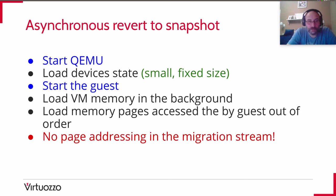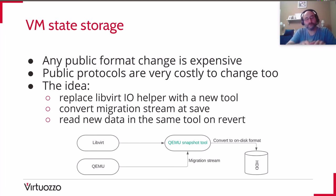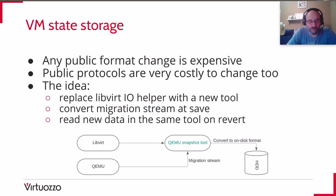But in this case there is a problem: we need to be able to find the guest page by guest physical address inside the migration stream, and that is not possible at the moment. The stream does not have any index. If we were to invent such an index, we would have to introduce some incompatibility within QEMU protocols and save that index to the migration stream. Also, this index would not be small, and it would need to keep several instances of each single page, since during migration those pages are sent multiple times.